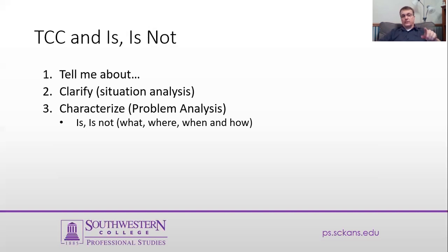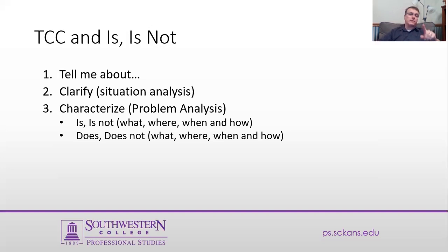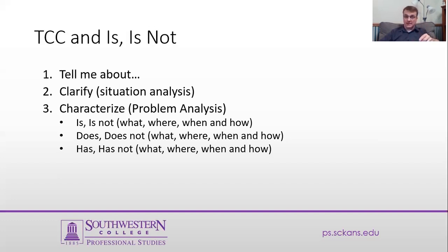When you get into the characterization and problem analysis phase, you use the is and is not framework. You go through a series of is and is not questions for each of these aspects: what, where, when, and how. What is happening? What is not happening? Where is it happening? Where is it not happening? You'll do the same for 'does and does not' and 'has and has not' across each dimension.